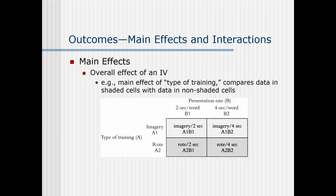Now let's talk about the outcomes — that is, what you get when you do a factorial design. You'll get main effects and then you'll get interactions. The main effects are overall the effects of one independent variable. In our example experiment, the main effect of type of training compares data in the shaded cells with data in the non-shaded cells. We look at all of the people who got rote training and all of the people who got imagery training. We're forgetting about the other independent variable — presentation rate — when talking about main effects. It's back to a simple one-IV experiment.